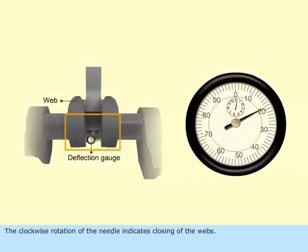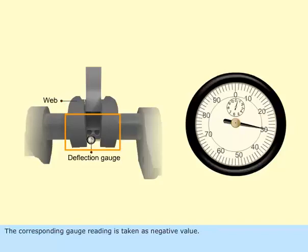The clockwise rotation of the needle indicates closing of the webs. The corresponding gauge reading is taken as negative value.